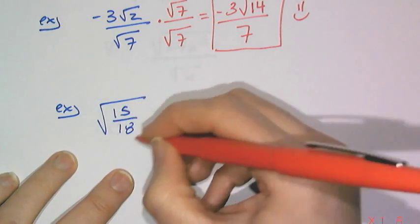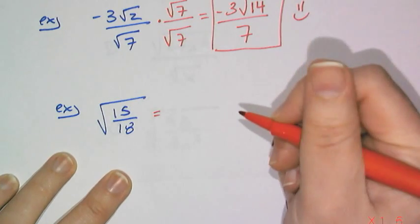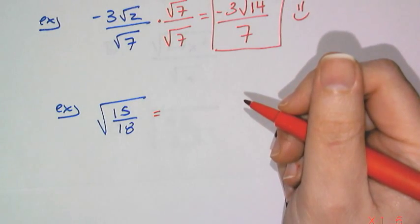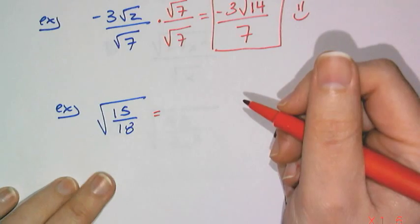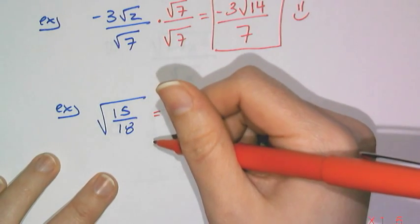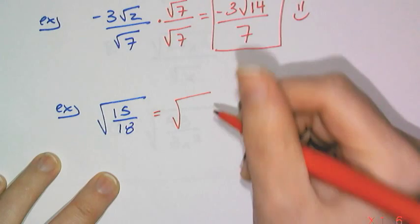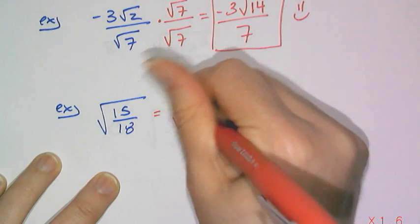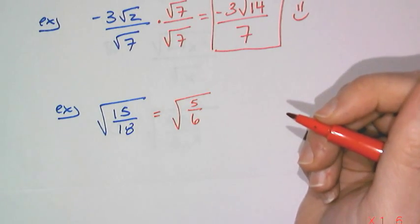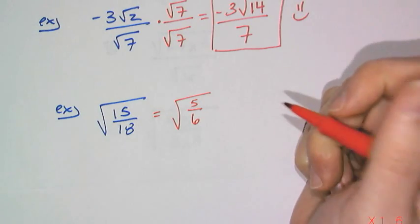Or I can see that 15 over 18 is not simplified itself as a fraction, because both the numerator and denominator are divisible by 3. And so I can go ahead and simplify that fraction first. Sometimes that's an easier way to do it, because it just makes the number smaller to deal with.